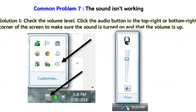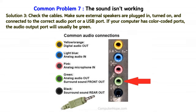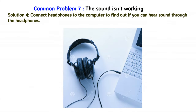Common problem 7: the sound isn't working. Solution 1: Check the volume level. Click the audio button in the top-right or bottom-right corner of the screen to make sure the sound is turned on and that the volume is up. Solution 2: Check the audio player controls. Many audio and video players have their own separate audio controls; make sure the sound is turned on and the volume is turned up in the player. Solution 3: Check the cables. Make sure external speakers are plugged in, turned on, and connected to the correct audio port or USB port. If the computer has color-coded ports, the audio output port will usually be green. Solution 4: Connect headphones to the computer to find out if you can hear sound through the headphones.